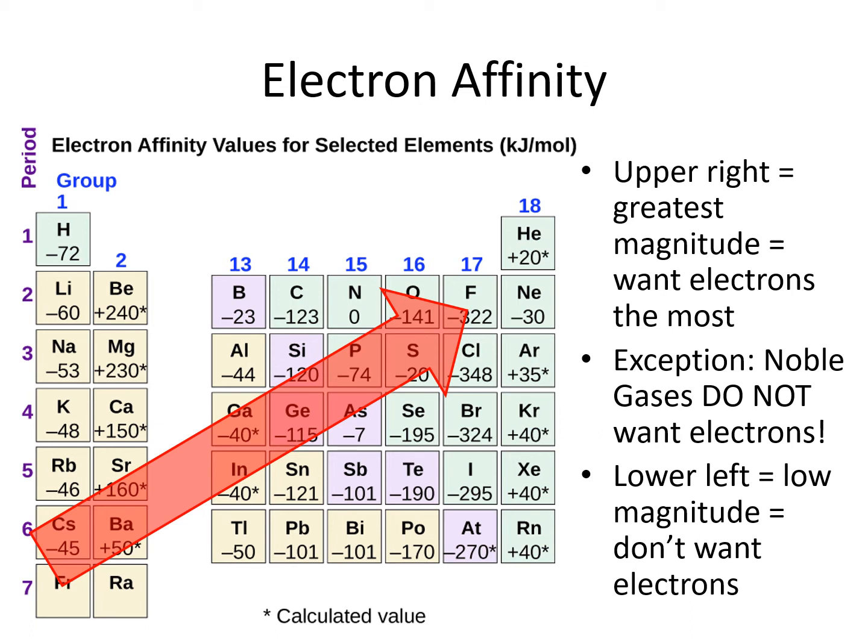Chlorine, on the other hand, being in the upper right, has a high electron affinity, meaning it really wants electrons. It will release 322 kilojoules per mole of energy when it gains an electron.